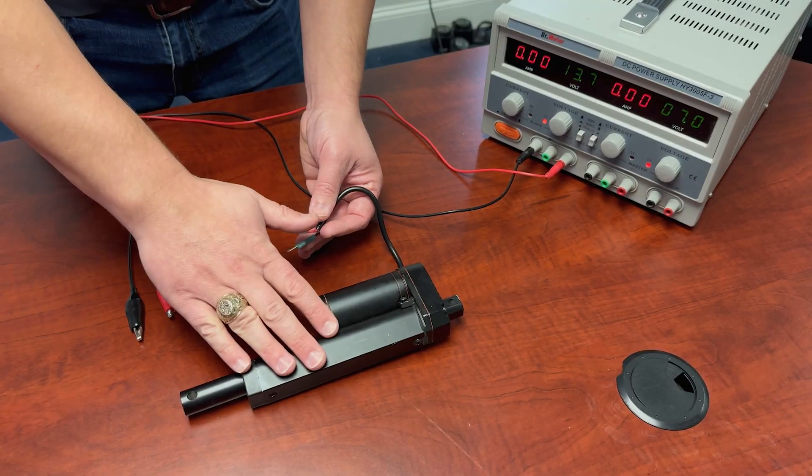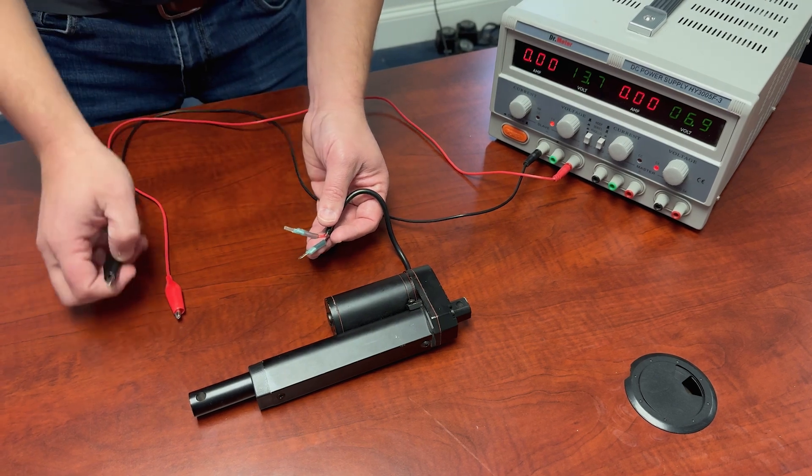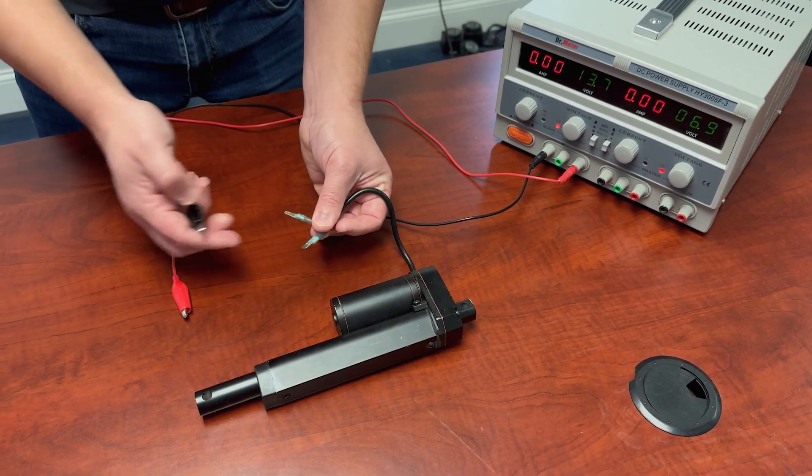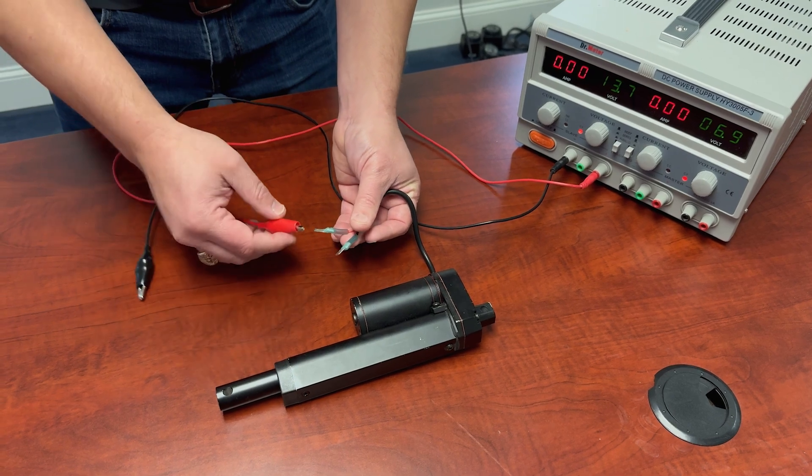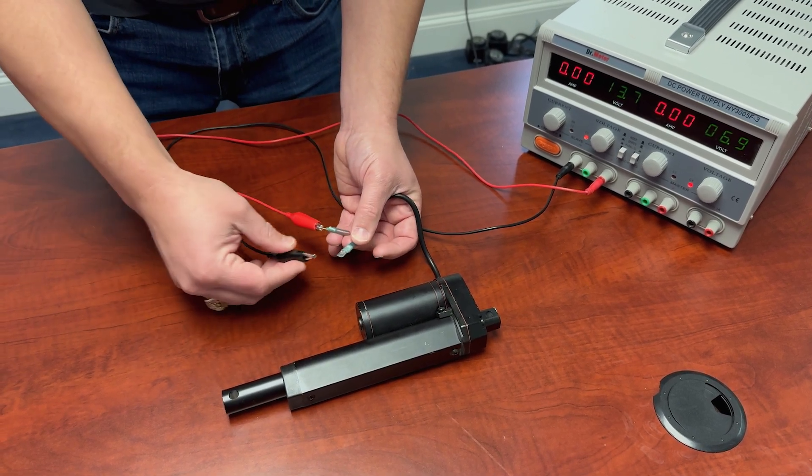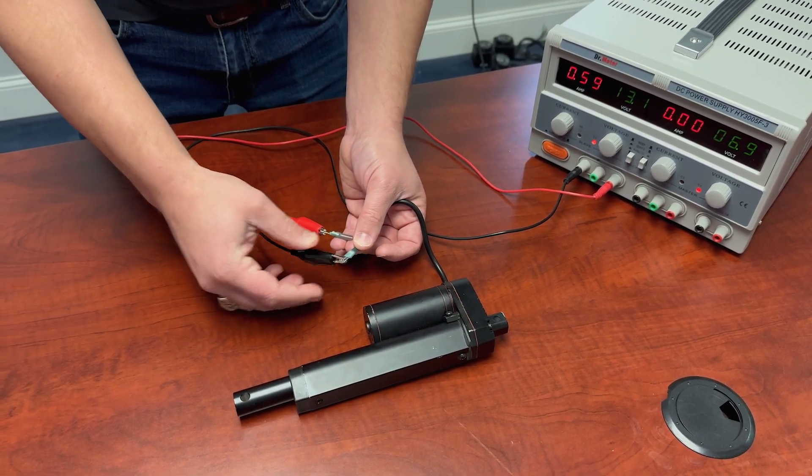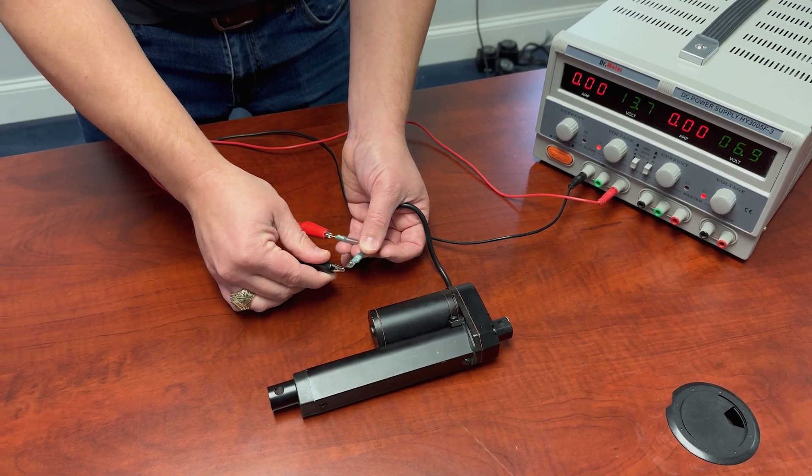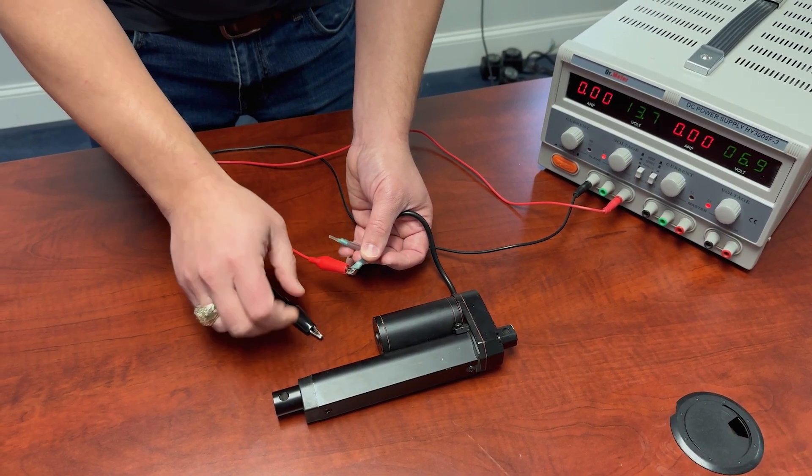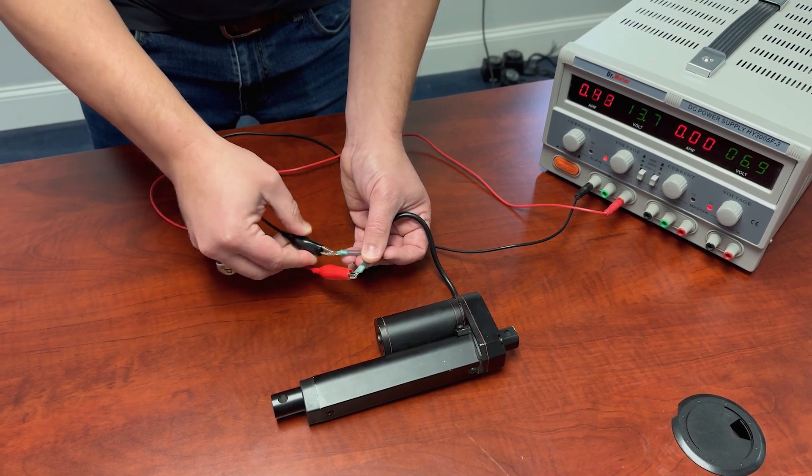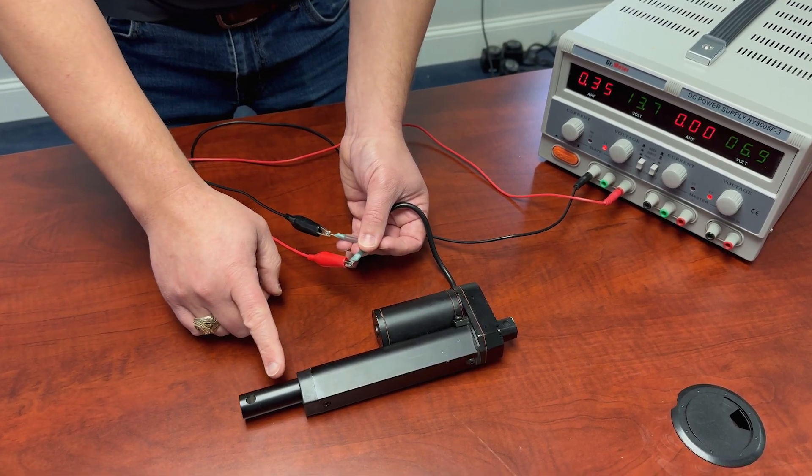So we have our linear actuator and our DC power supply at 12 volts. These are the two leads coming from the linear actuator. Positive is red, negative is black. Now I'm going to apply these leads and you'll see that the motor spins making the actuator go in. Now I'm going to reverse polarity. I'm going to take the negative off and put the positive in that place. It goes the other direction.